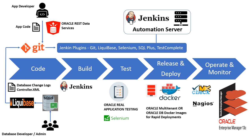Or source code could be database code written in the form of DDL, DML, or database commands used to define and modify our database schema and its objects. While application source code files are managed through source code and version management tools like Git or GitHub, SVN, Bitbucket, etc., we need a similar mechanism to track, manage, and maintain versions of database source code as well, which is used to build and modify database schema and underlying objects.